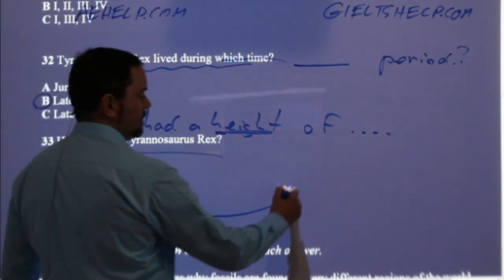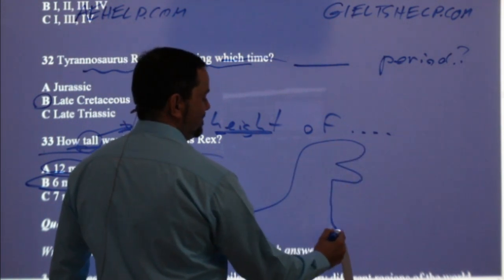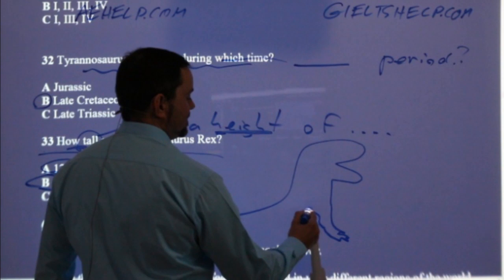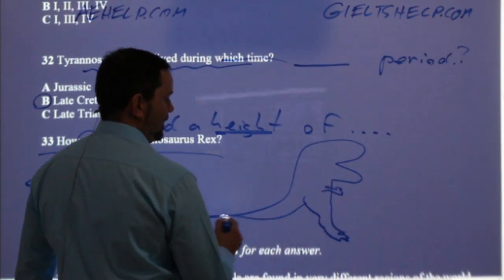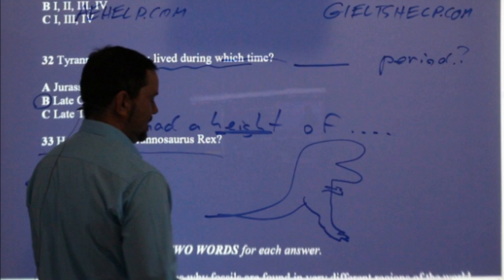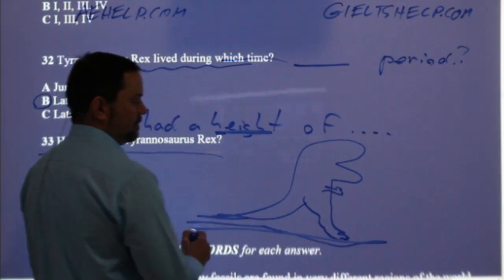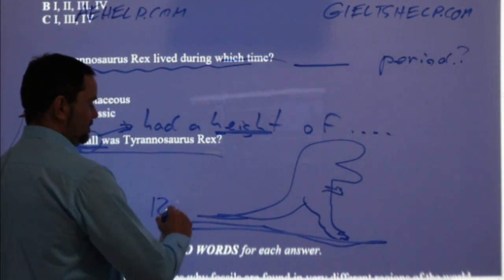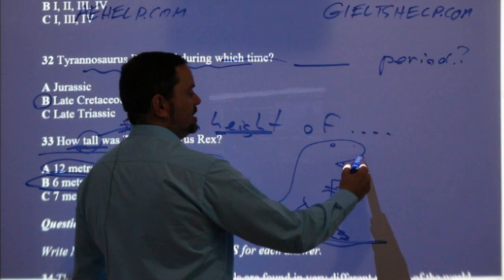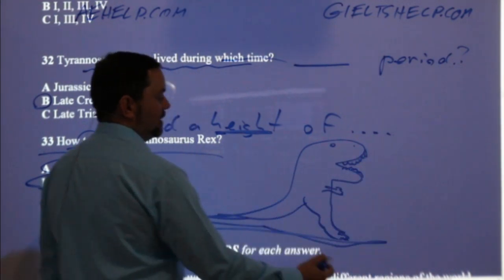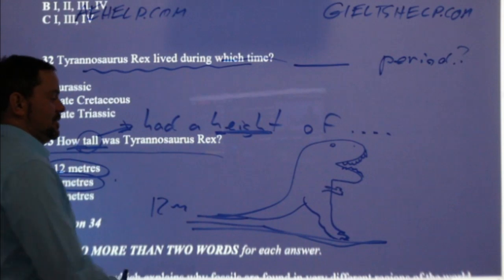If you think of the T-Rex — these dinosaurs had really long tails to balance. So 12 meters length, and serrated teeth, and tiny little arms. That's my T-Rex drawing there.